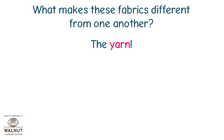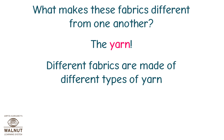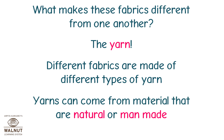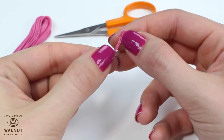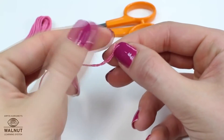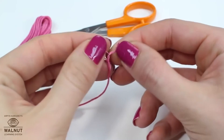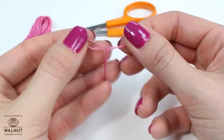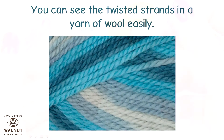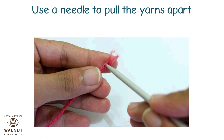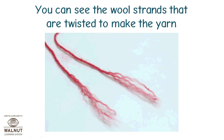Different fabrics are made of different types of yarn. Yarns can come from materials that are natural or man-made. Take a yarn of cotton and try to separate its strands. You can see the twisted strands in a yarn of wool easily. Use a needle to pull the yarns apart and you can see the wool strands that are twisted to make the yarn.